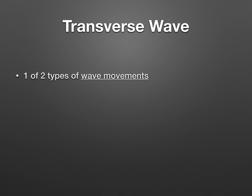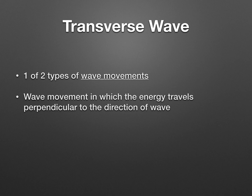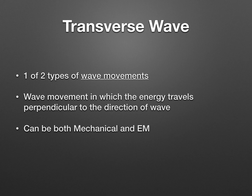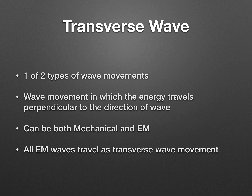The next is the two types of wave movements. A lot of people get confused between types of waves and wave movements. Transverse is one of two types of wave movements. It's a wave movement in which the energy goes perpendicular to the direction of the wave — meaning if the wave is moving straight, the energy is going up and down. This can be either a mechanical or EM wave; however, all EM waves travel as transverse wave movements.